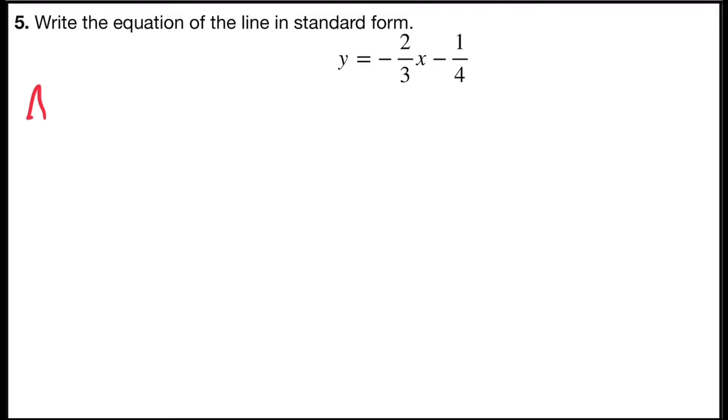And so in standard form ax plus by equals c, I have to have all integers a, b, and c, and I have fractions in my slope-intercept form. So I'm going to multiply both sides by the least common denominator. So I have a denominator of three and a denominator of four, and the least common denominator of three and four would be twelve.